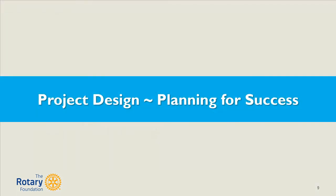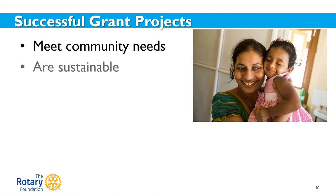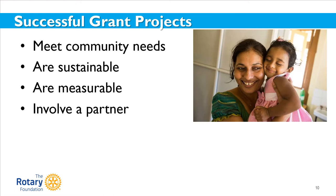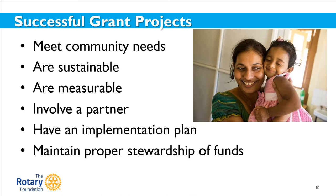Let's briefly talk about planning for success with your project. There are six aspects to successful grant projects: the projects meet community needs, they are sustainable, their results are measurable, the project has an international partner, the planning process includes an implementation plan, and all partners maintain proper stewardship of the funds.